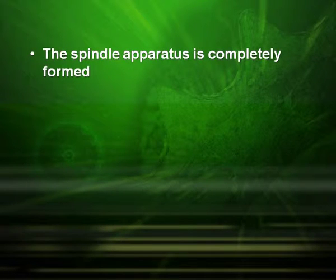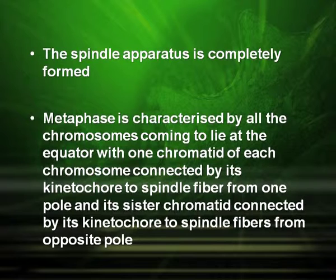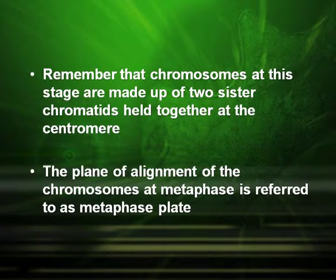The spindle apparatus is also completely formed. Metaphase is characterized by all the chromosomes coming to lie at the equator, with one chromatid of each chromosome connected by its kinetochore to the spindle fibre from one pole and its sister chromatid connected by its kinetochore to the spindle fibre from the opposite pole. Remember that chromosomes at this stage are made up of two sister chromatids held together at the centromere. The plane of alignment of the chromosomes at metaphase is referred to as the metaphase plate.